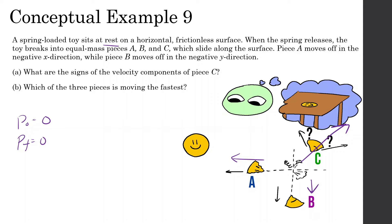It asks which of the three pieces is moving the fastest. They're all equal masses. For piece C moving diagonally, since they all have the same mass, piece C must have the same y-component of velocity as piece B and the same x-component of velocity as piece A in order for the momenta to cancel. That means piece C is going to be going the fastest, because the hypotenuse is going to be the biggest — the resultant velocity is larger than either component alone. So C is going the fastest.